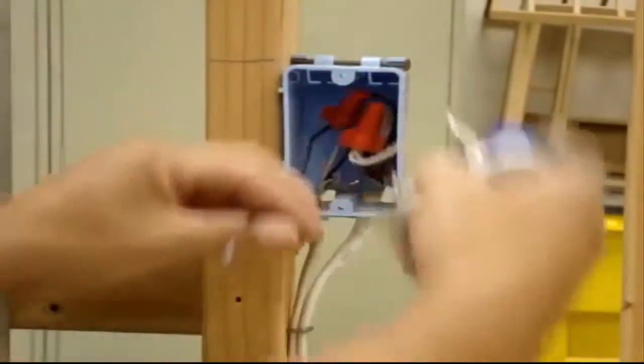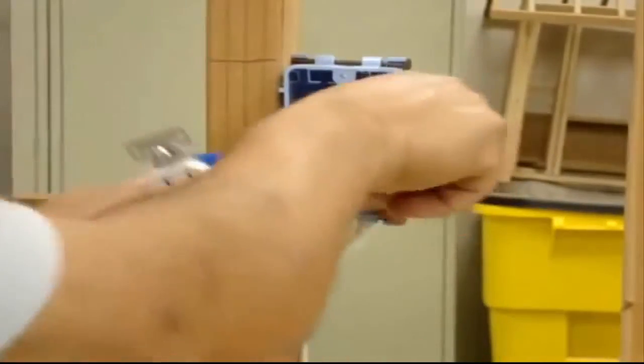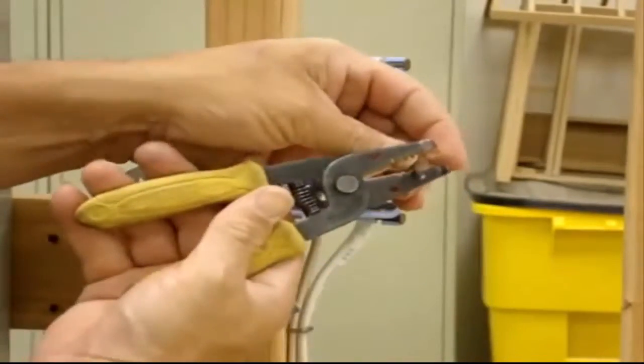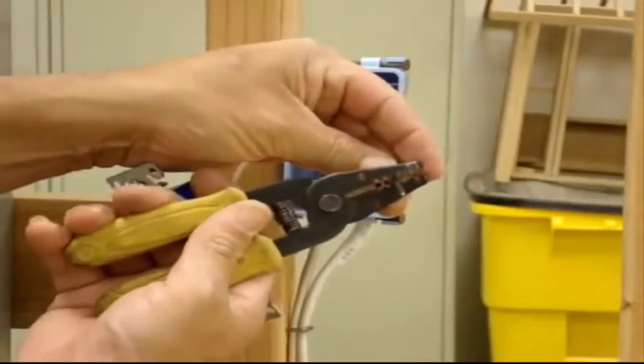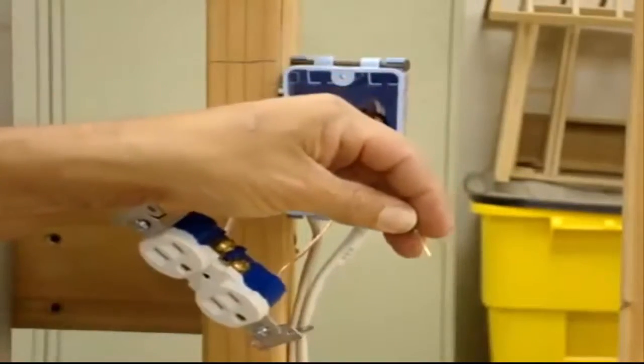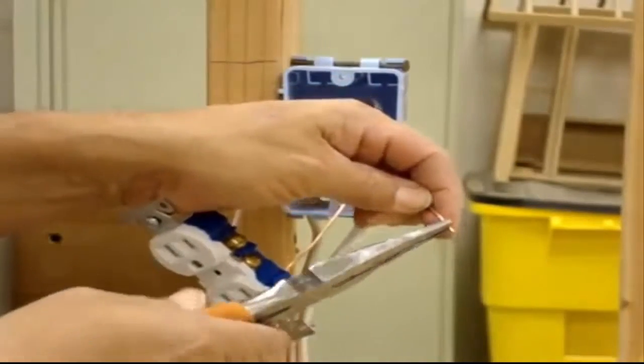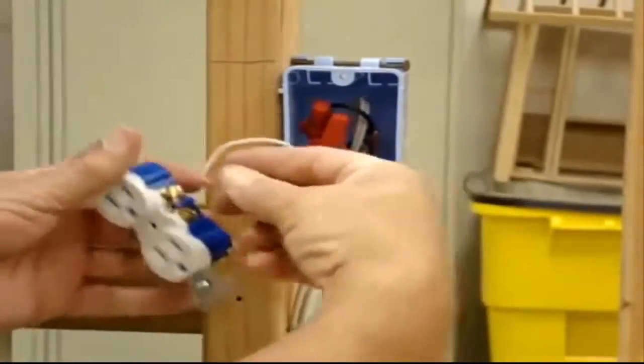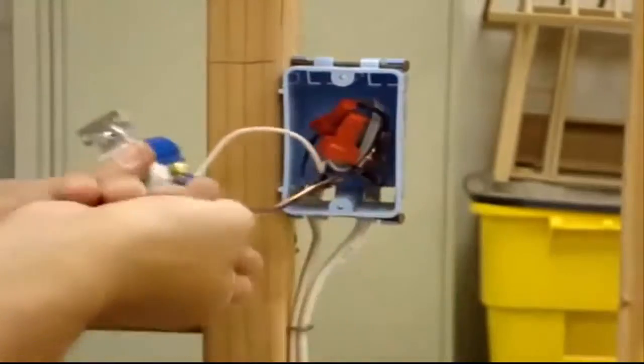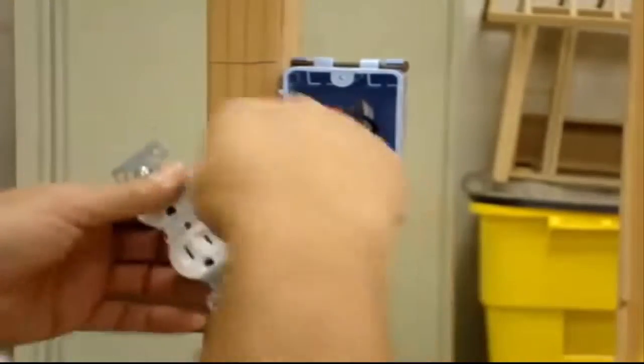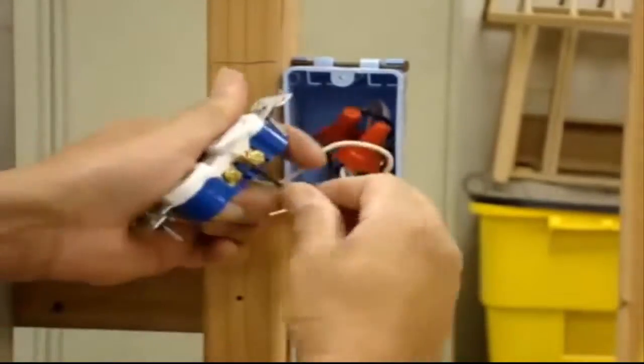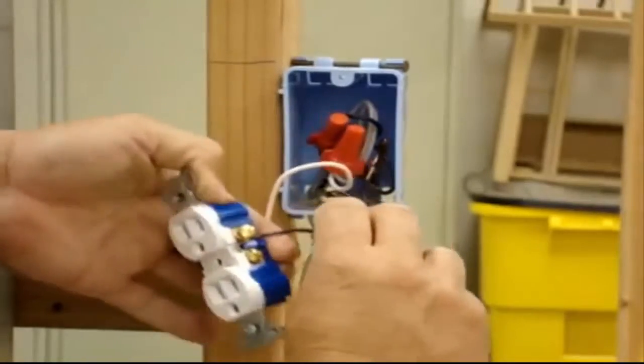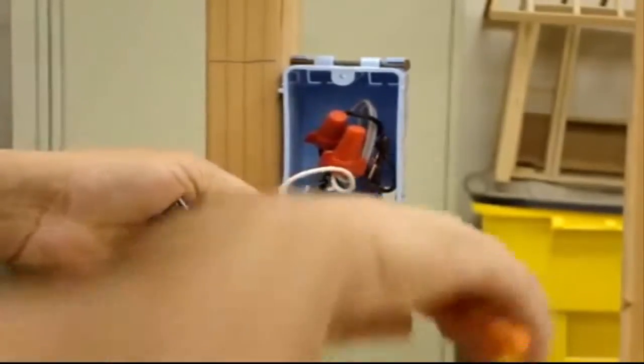Now you got that one, now we're going for the black which is our power. Cut that one back also, cut three quarters or so, and we twist it. And we put it on our outlet, real tight.